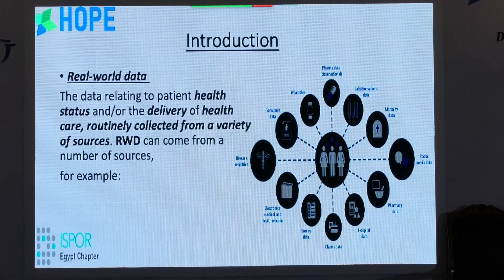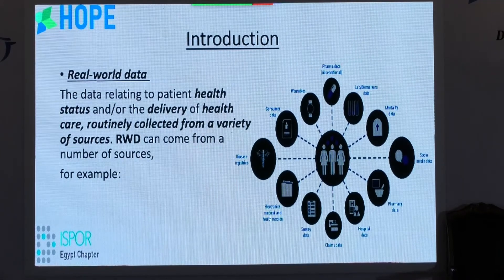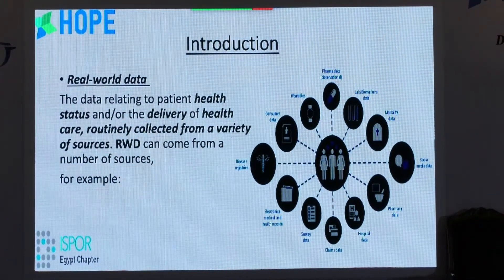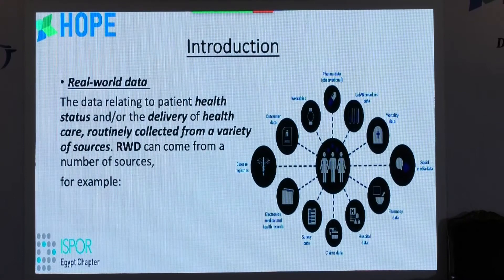First of all, there are two terminologies we can use interchangeably, but they are a little different: real-world data and real-world evidence. Real-world data refers to patient health status or delivery of health care, routinely collected from a variety of sources — such as patient registries, mortality status, survey data, and electronic medical records.